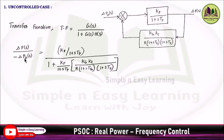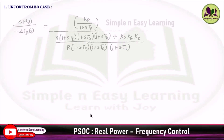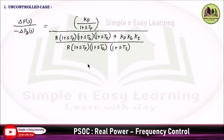So ΔF(s) divided by −ΔPD(s) equals KP/(1 + sTP) divided by 1 plus [KP/(1 + sTP)]·H(s). Taking LCM in the denominator, the remaining numerator term is KP·KG·KT, and the LCM of the denominator term is R·(1 + sTP)·(1 + sTG)·(1 + sTT).